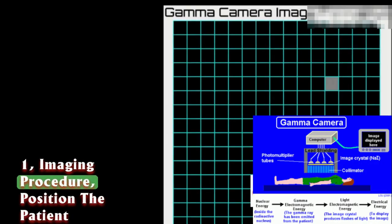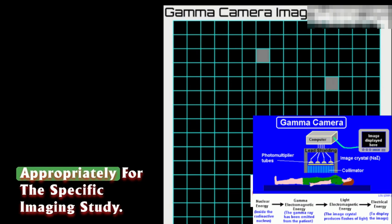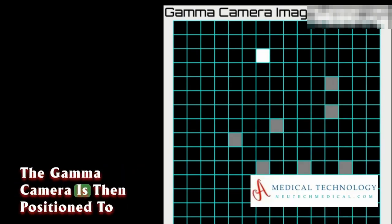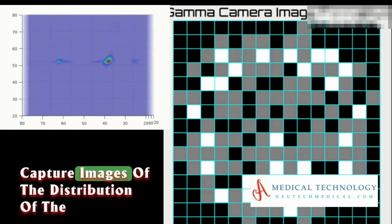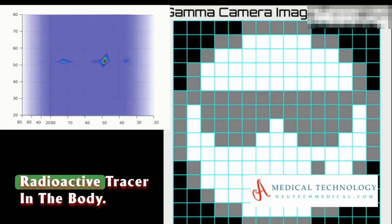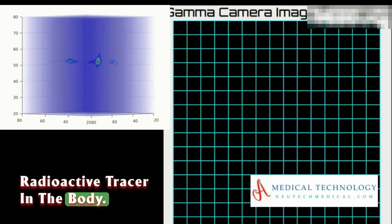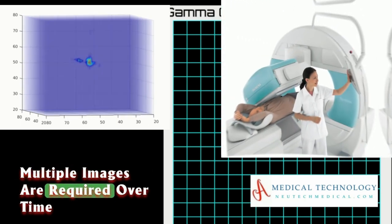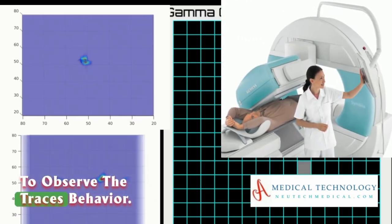Imaging procedure: Position the patient appropriately for the specific imaging study. The gamma camera is then positioned to capture images of the distribution of the radioactive tracer in the body. Multiple images are required over time to observe the tracer's behavior.